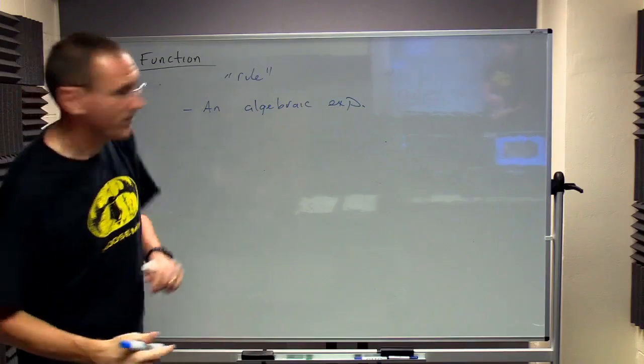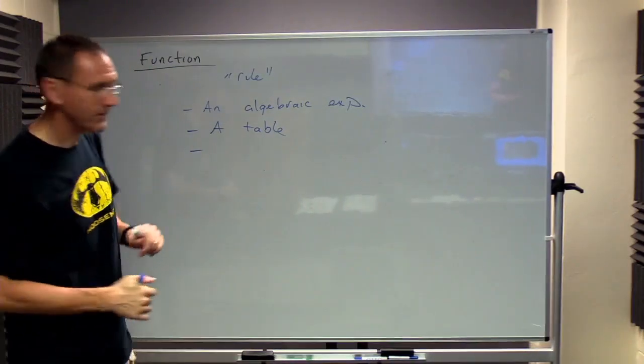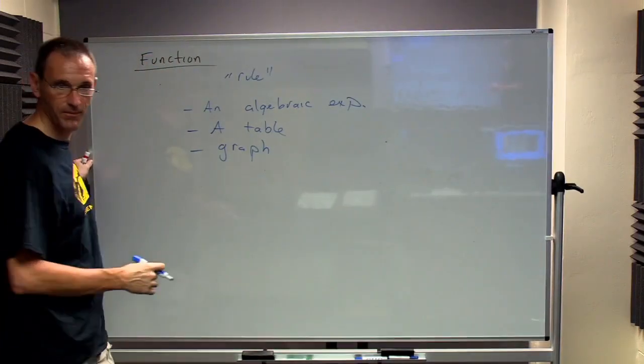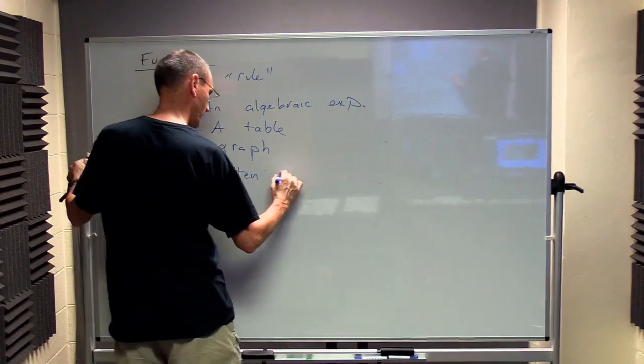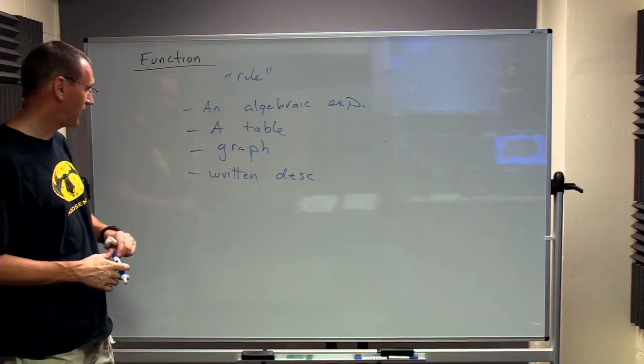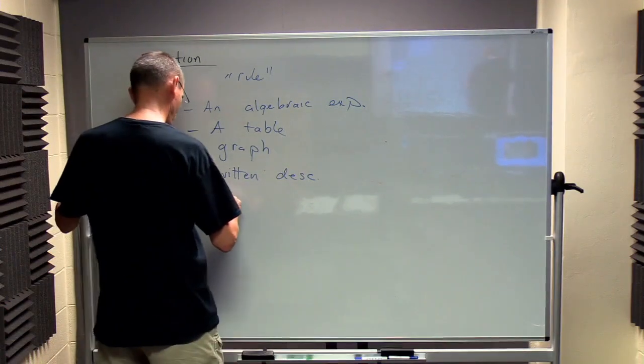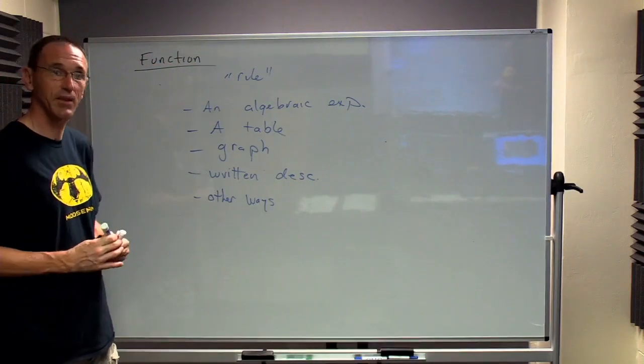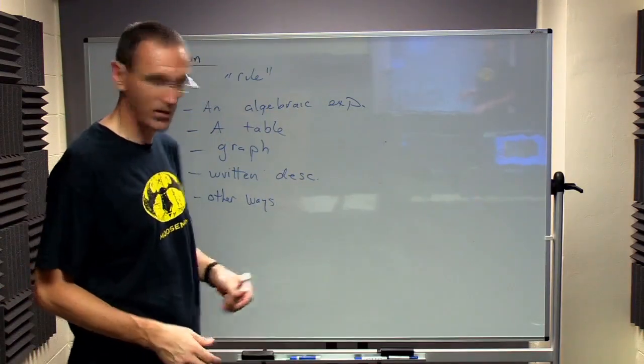Or we can use a table. I'll give an example of that later. We can do this graphically. We can do the graph of a function. We can have a written or verbal description of a function. And this is how these things most often come up in practice, and what makes them very confusing. And unfortunately, there's a lot of other different ways we can do these things. So these things come up a lot in practice, and there's just a lot of different ways we can use to express these things.